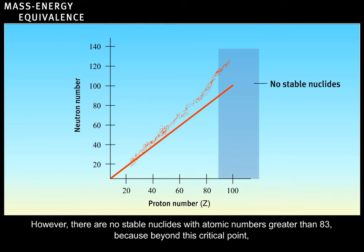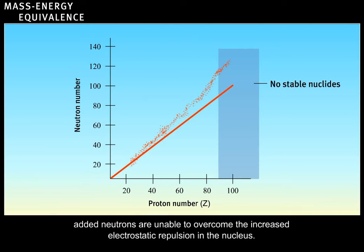However, there are no stable nuclides with atomic numbers greater than 83, because beyond this critical point, added neutrons are unable to overcome the increased electrostatic repulsion in the nucleus.